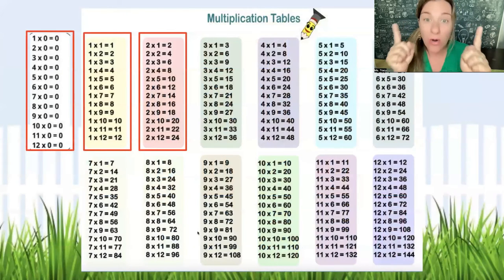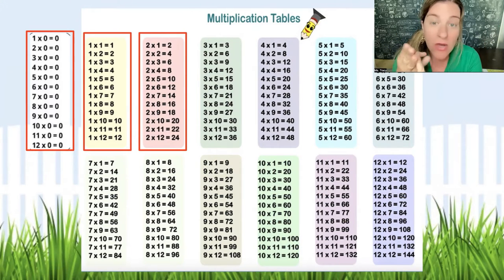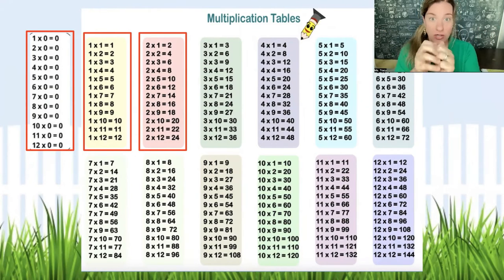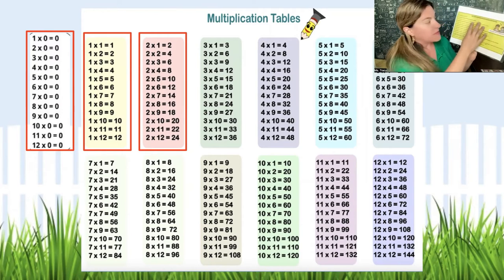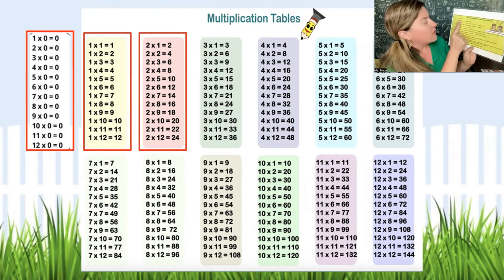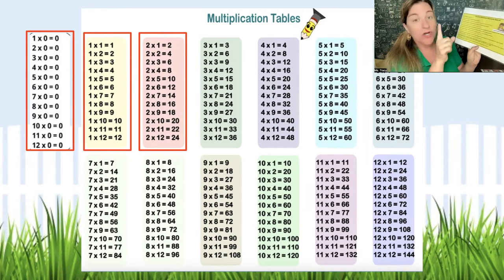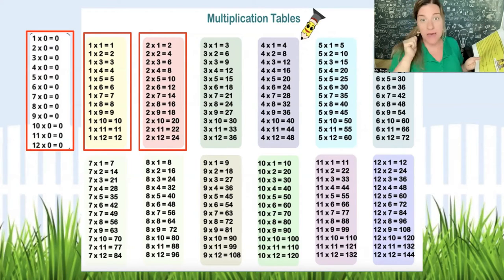I'm here to teach you not only how to get the answer to all of these facts — which your teachers, parents, and I all want you to know — but also how to do bigger problems at the same time. If you're going to learn how to do 2 times 12, you might as well learn how to do 2 times 112, because it's the same logic. We're going to go through this magical list of rules, starting with 0s, then 1s, then 2s, not necessarily in order by value but from easiest to hardest.